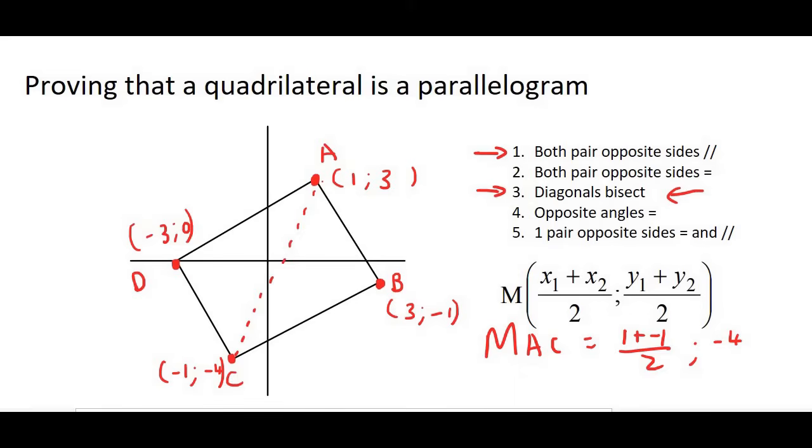So it's going to be one plus minus one over two and then minus four. Sorry, three must come first. So it'll be three plus minus four over two. And this is actually going to give us zero and negative a half. So that's the midpoint of AC.